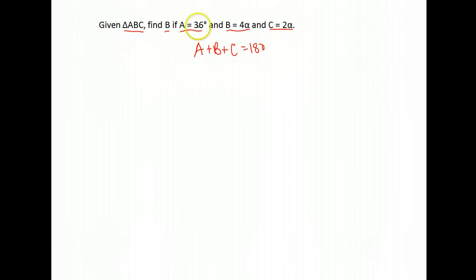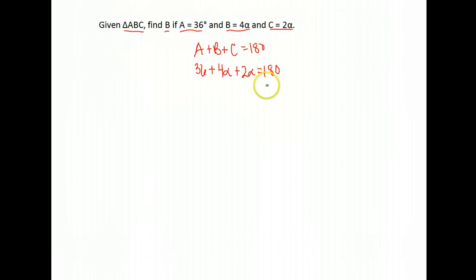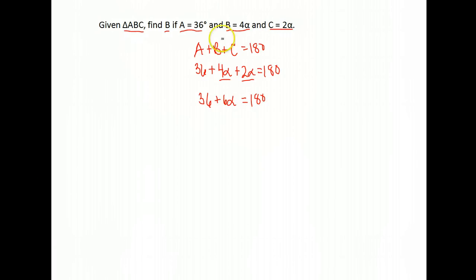Substituting the values: A is 36, so we have 36 plus angle B which is 4 alpha — you can just use 'a' if you're not keen on writing alpha symbols — plus C which is 2 alpha, and they add to be 180. We combine like terms on the left side: 4 alpha and 2 alpha gives us 6 alpha.